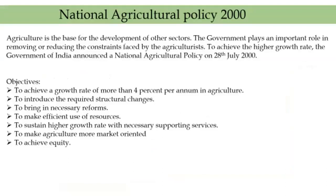Agriculture is the base for the development of other sectors of the economy. Its importance lies in the fact that it provides the most essential consumption goods for the people. It is however discouraging to note that since independence, agricultural growth on average was less than 4%, and in certain years the growth rate was even negative. The government plays an important role in removing or reducing the constraints faced by agriculturists — that means problems — with the objective of establishing an appropriate and conducive environment to achieve a higher growth rate. The Government of India announced a National Agricultural Policy on 28 July 2000.